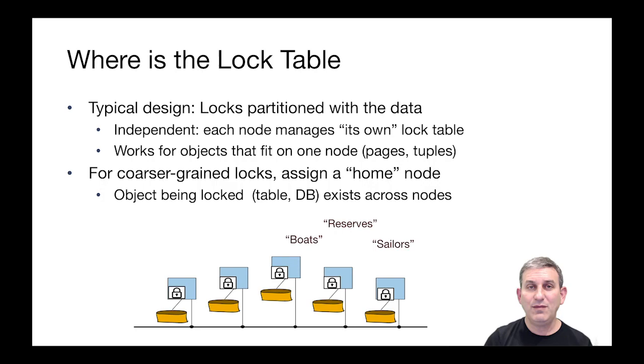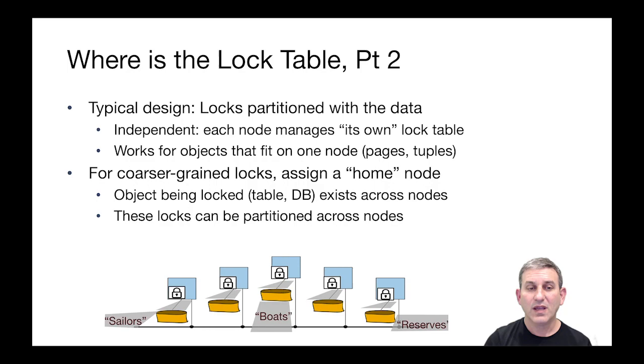Now, for things like tables, they may be spread across multiple computers. So for these coarser-grained locks, we're just going to have to assign some home node for that. And that object that's being locked exists across all the nodes, but one of the nodes is the home node that's responsible for that lock.